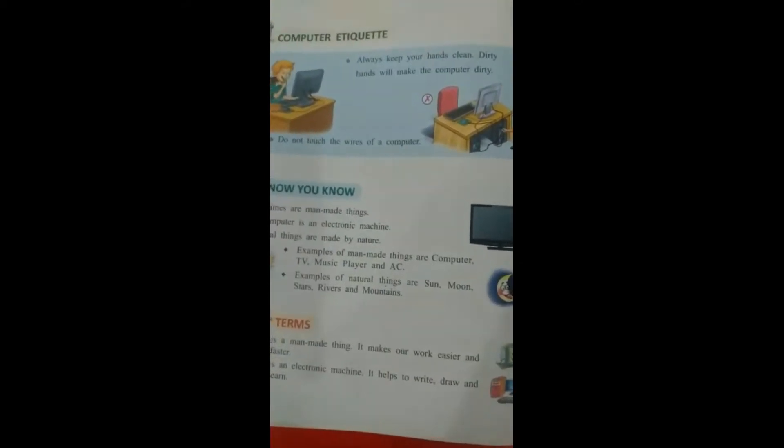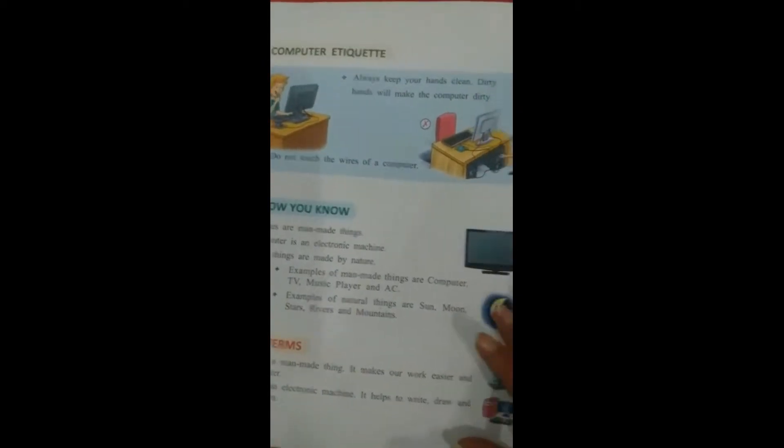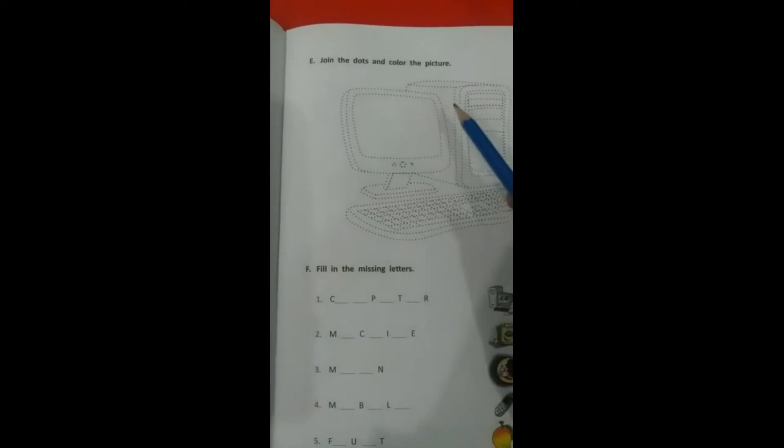Now you know what we have learned: natural things that God has made and man-made things which are made by humans. Then we have started the exercises A, B, C. Now we have done exercise E.